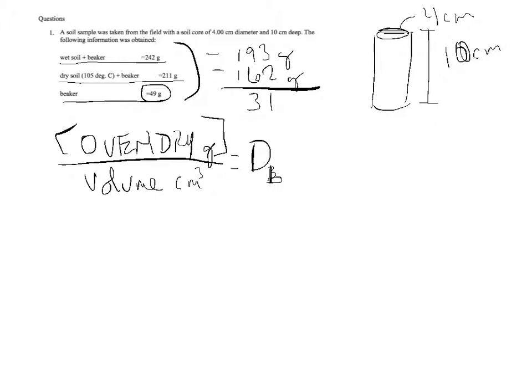31 grams, that's the water in the soil. The water in the soil is 31 grams of H2O.